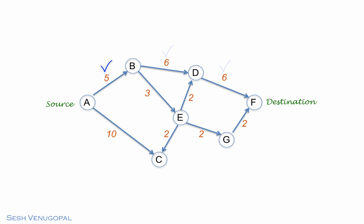The length of the A, B, E, D, F path is 16, and that of the A, B, E, G, F path is 12. So the shortest path is A, B, E, G, F.